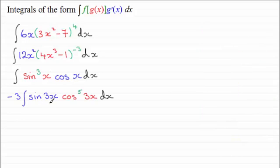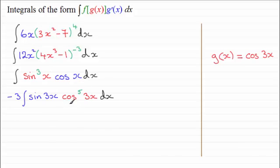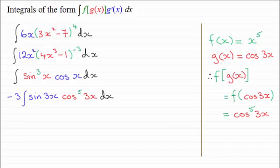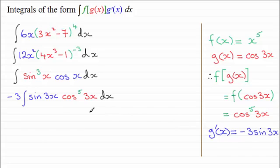Here's another example with multiple angles — the angle 3x instead of x. G of x is cosine of 3x, and f of x is x to the power 5, so combining them gives cosine to the power 5 of 3x. The differential of g of x, cosine of 3x, is minus 3 sine 3x. I've taken the opportunity to take that constant minus 3 out in front of the integral, so do check out that situation as it may happen.